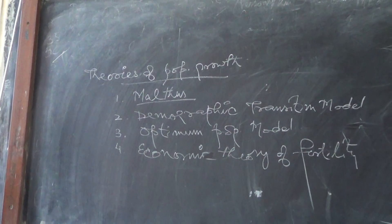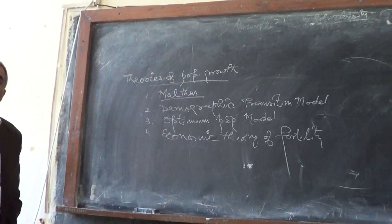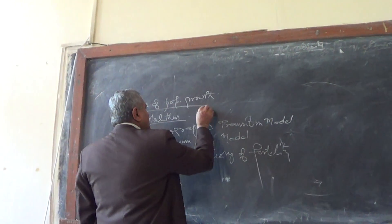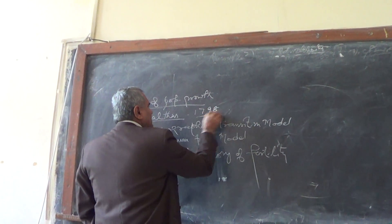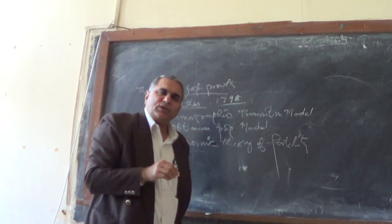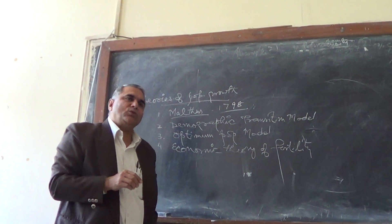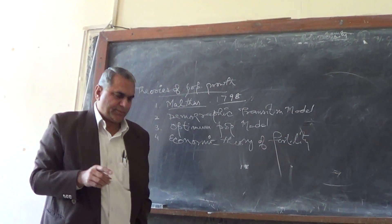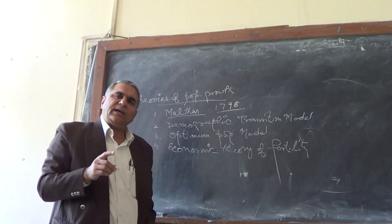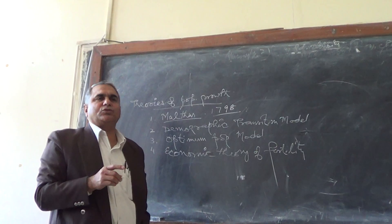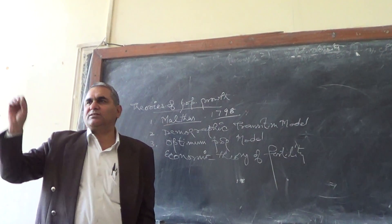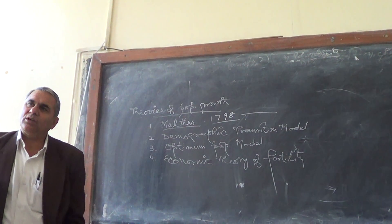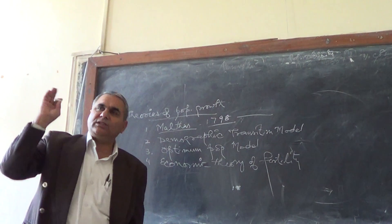These are the four different theories about Population Growth. In 1798, Malthus — he was an English Demographer, associated with the University of Edinburgh — first time in the world wrote essays on Population Growth and gave a theory about population according to that timeline.